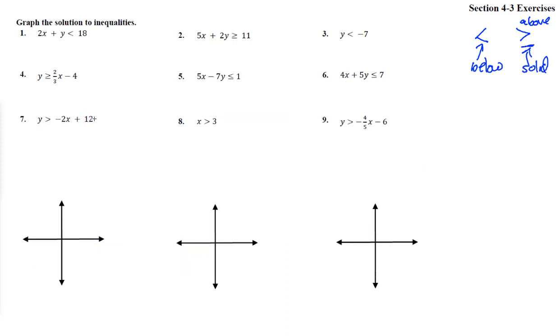Number 7. Y is greater than negative 2x plus 12. We start up here at positive 12, zoom out a little bit to see that, and then down 2 over 1. And y is greater than, so we do not include the solid line. So it's going to be a dashed line like that. And then it says y is bigger than that. So we're up here on this side of the line.